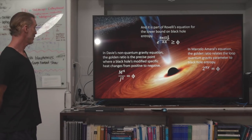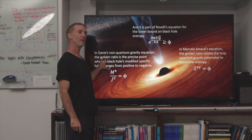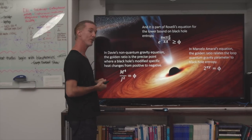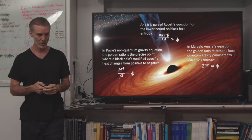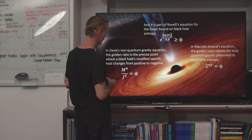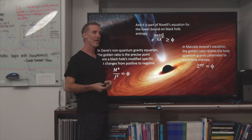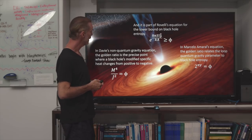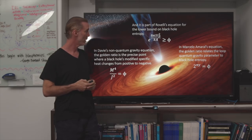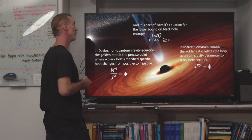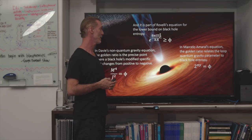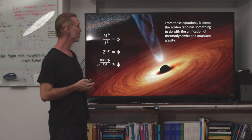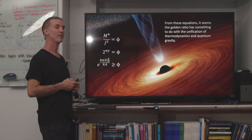We're all familiar with three key equations. Davy's equation uses classical thermodynamics and general relativity, and there is a special non-trivial phase transition in which the golden ratio appears on the right side. In Rovelli's equation, which incorporates quantum mechanics and assumes both quantum mechanics and general relativity to be true using principles from entropy theory, the golden ratio again appears on the right side. And in Marcelo Amaral's equation, the golden ratio relates the loop quantum gravity parameter to black hole entropy in an even more elegant expression. From these equations, it seems the golden ratio has something to do with the unification of thermodynamics and quantum gravity.